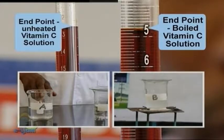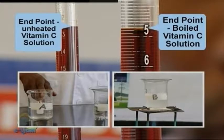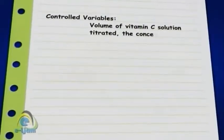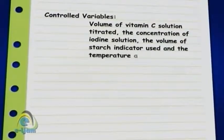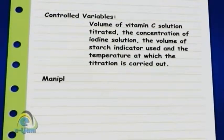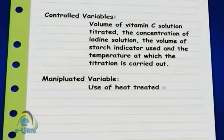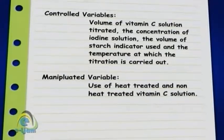This meant that if there was any difference in the results obtained, it must be due only to the fact that the heat was varied for each of the experiments conducted. The responding variable was the titer volume of iodine solution, or concentration of vitamin C solution.